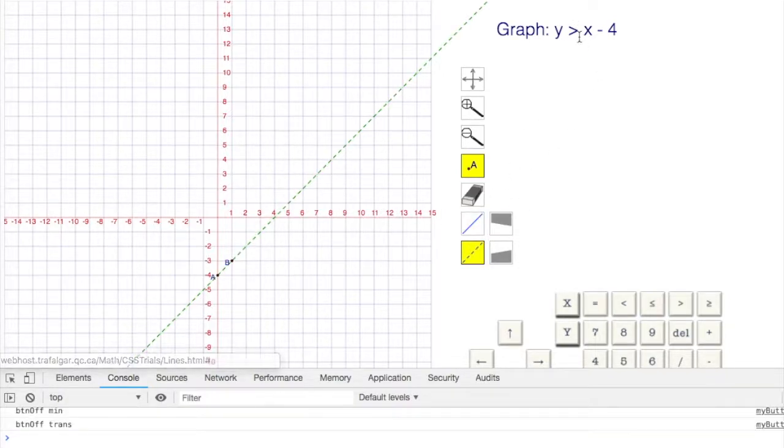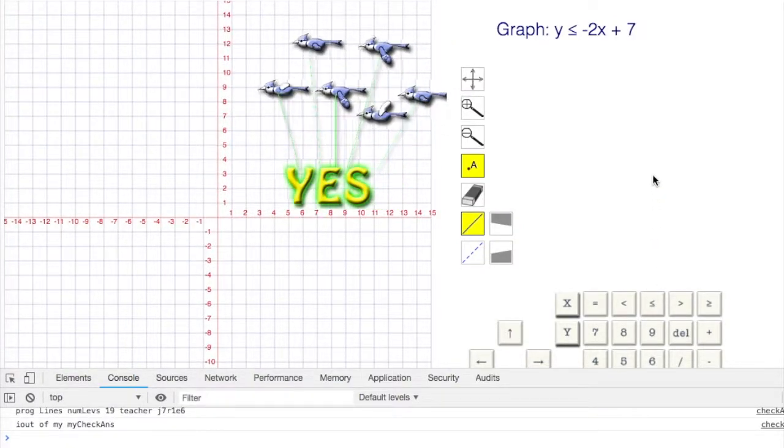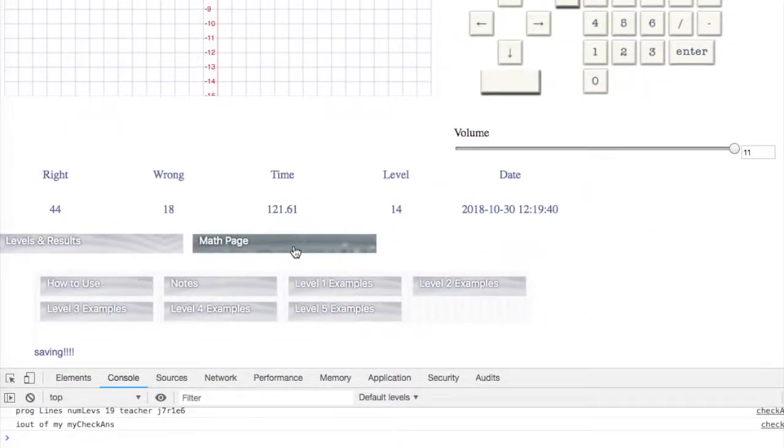It's going to be dotted because it's not equal to, and greater than means I'm shading above. That is it for level number 14.